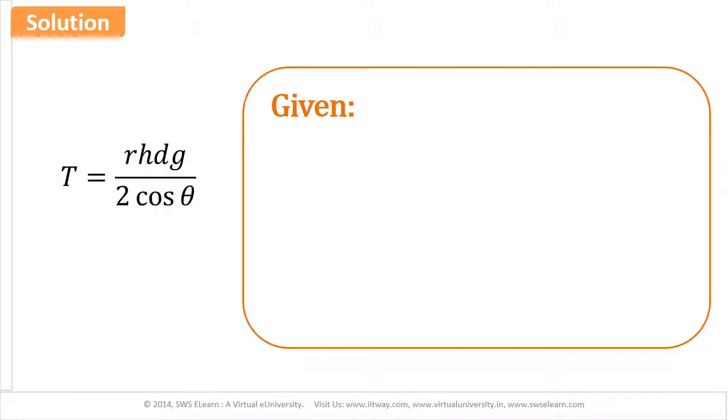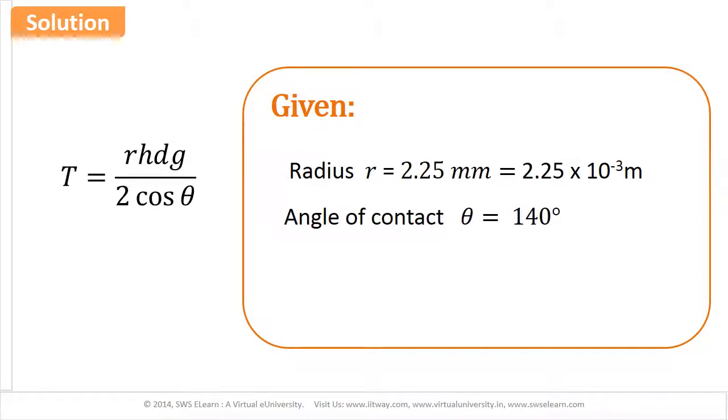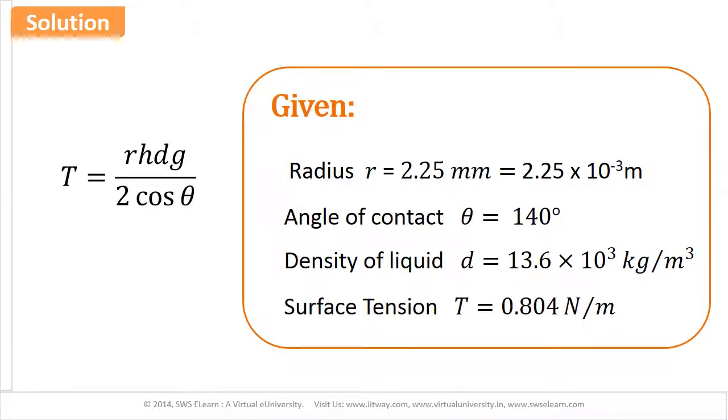The values given in the problem are: radius R = 2.25 mm, angle of contact θ = 140 degrees, density of liquid D = 13.6 × 10³ kg per meter cubed, and surface tension T = 0.804 N per meter.